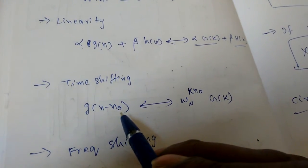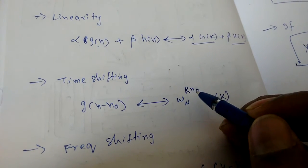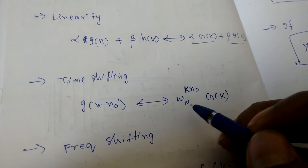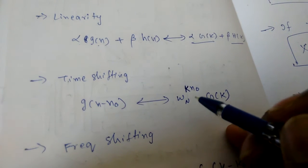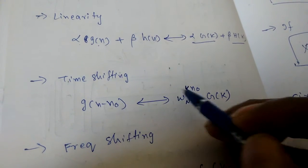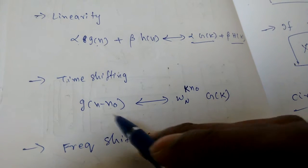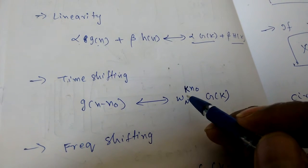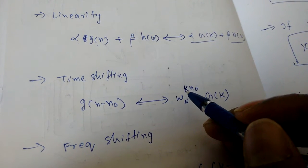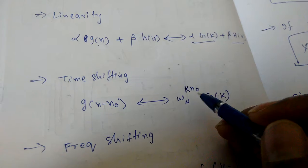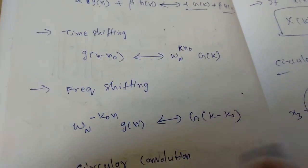The next property is time shifting. If G(n - n₀) is the input, the DFT is W_N^(K·n₀) · G(K). Remember: in Laplace and Z transforms a minus gives a minus, but in the DFT a minus in the time domain gives a plus — W_N^(K·n₀) always.